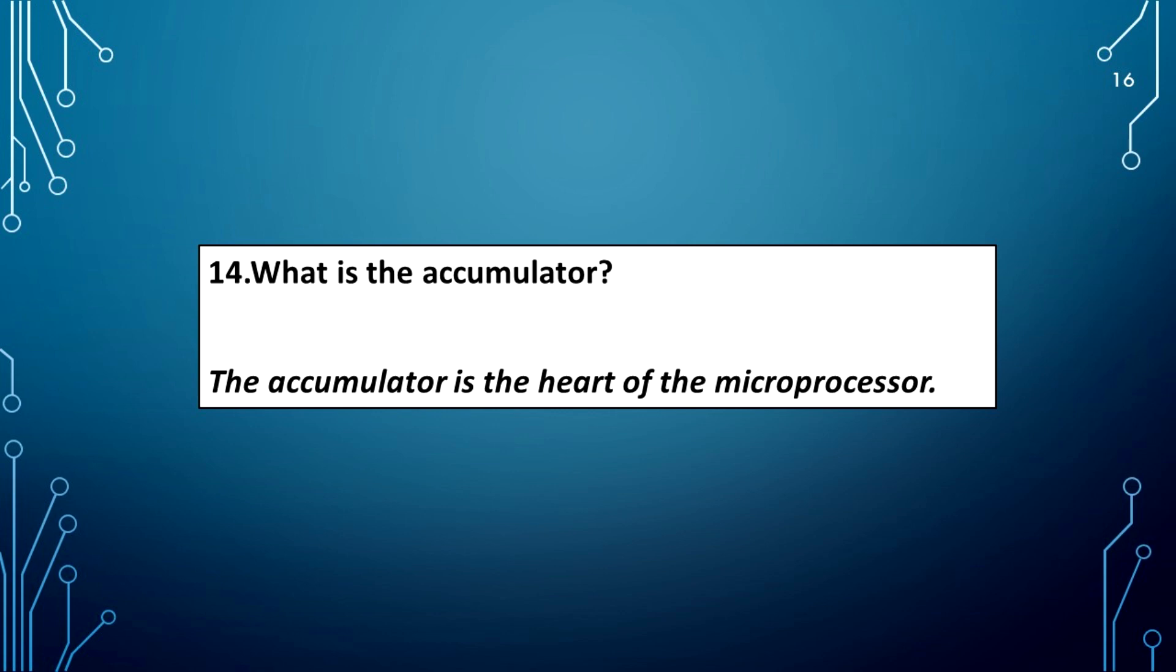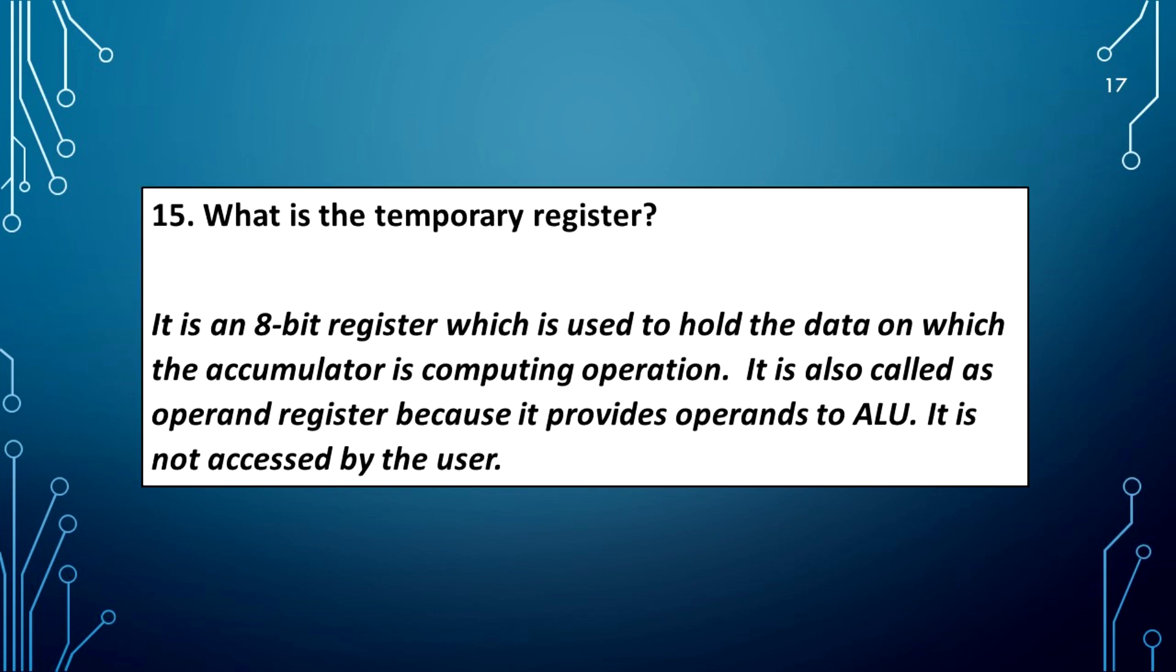What is the accumulator? The accumulator is the heart of the microprocessor. What is the temporary register? It is an 8-bit register which is used to hold the data on which the accumulator is computing operation. It is also called as operand register because it provides operands to ALU. It is not accessed by the user.